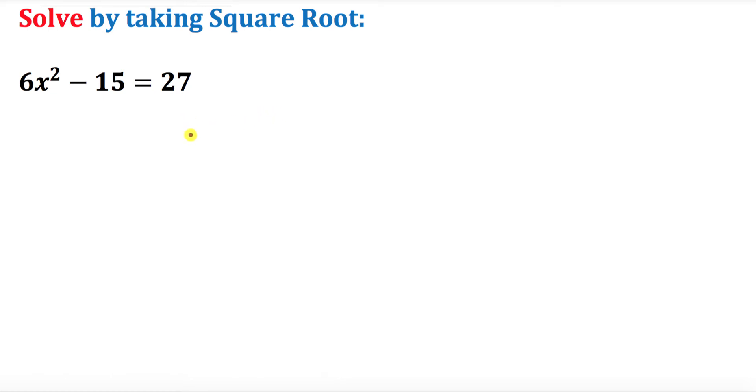Hello again everyone. In this video tutorial we are going to solve this given equation by taking the square root. So let's go ahead and first we want to isolate the x variable. So that means we're going to add 15 on both sides.